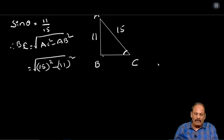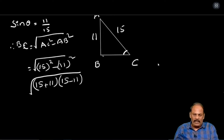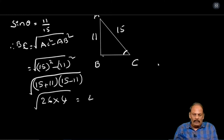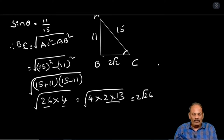This is in the form of A square minus B square — you can write it as A plus B into A minus B under root. 15 plus 11 equals 26; into 15 minus 11 equals 4. Now 4 into 26 equals 2 into 13 into 4; that equals 2 root 26. We leave BC equal to 2 root 26.